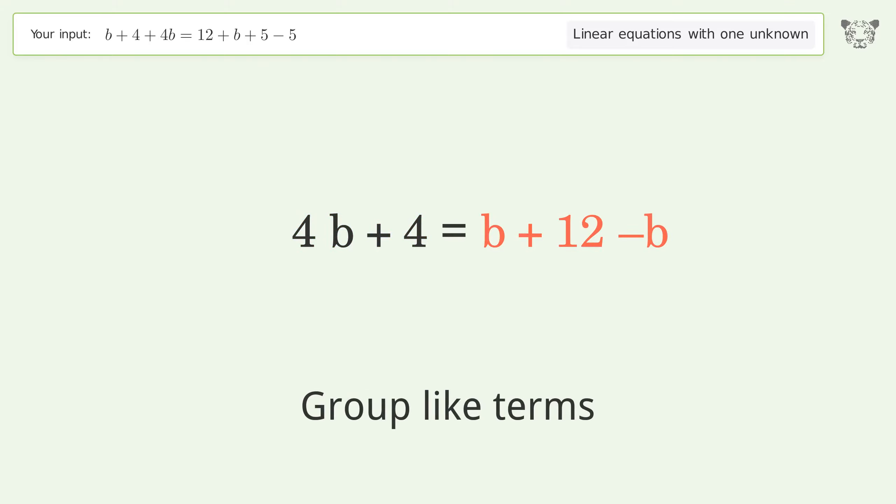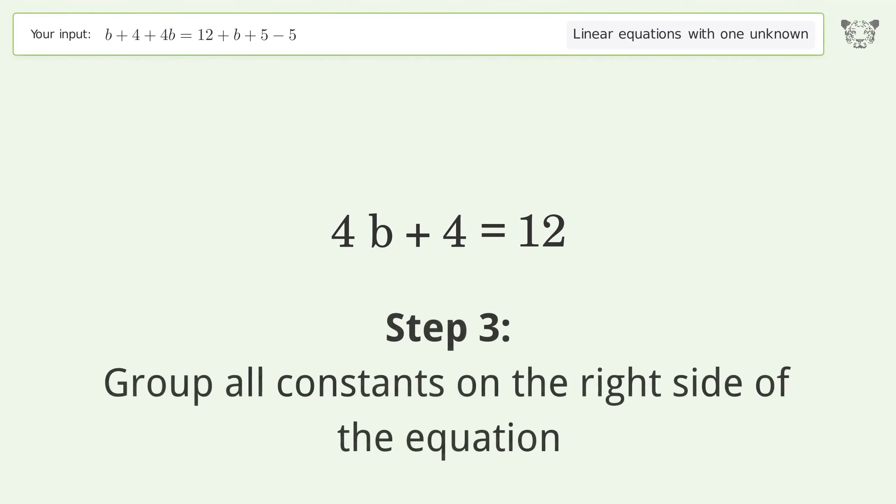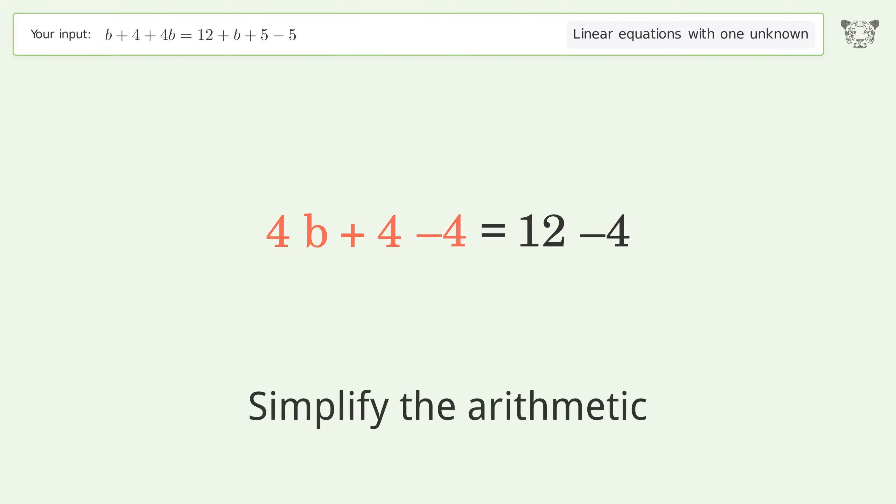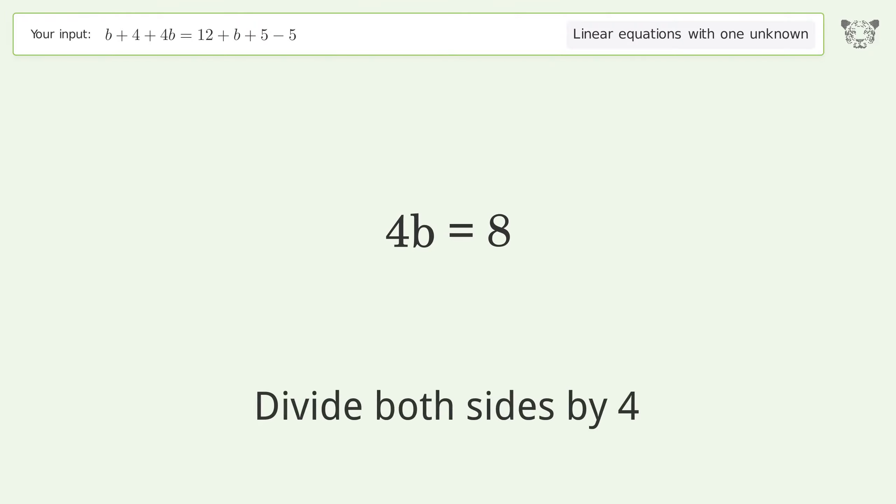Group like terms, simplify the arithmetic. Group all constants on the right side of the equation. Subtract 4 from both sides. Simplify, group like terms. Isolate b by dividing both sides by 4.